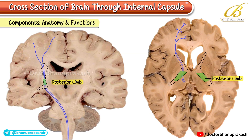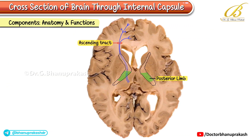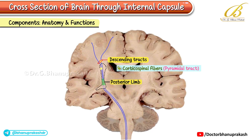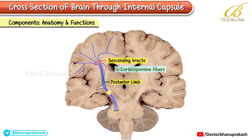Posterior limb: The posterior limb of the internal capsule consists of both ascending and descending tracts. Ascending tracts: Superior thalamic radiation continues to transmit sensory information from the thalamus to the cerebral cortex. Descending tracts: Corticospinal fibers (pyramidal tract) carry motor commands from the cortex to the spinal cord. Corticopontine fibers project to the pons and corticorubral fibers reach the red nucleus.